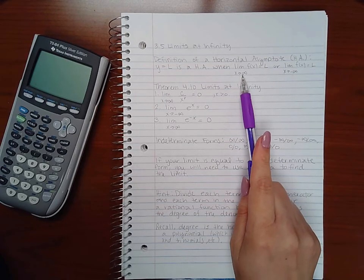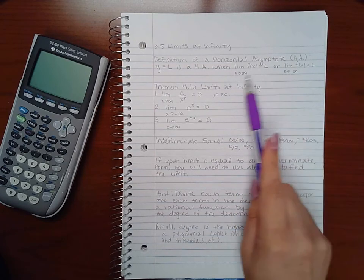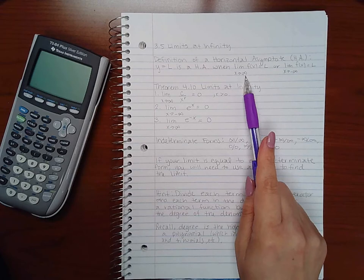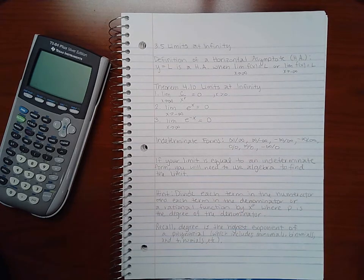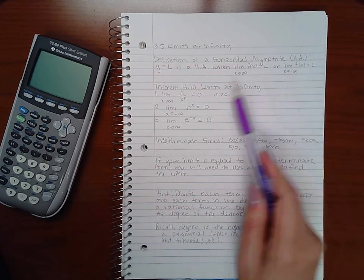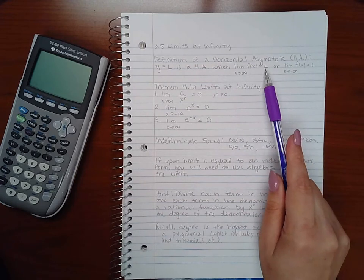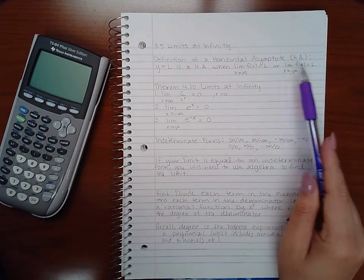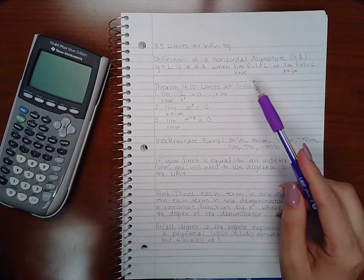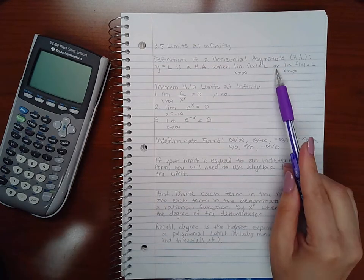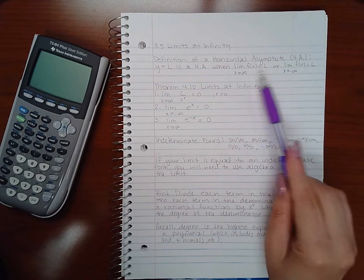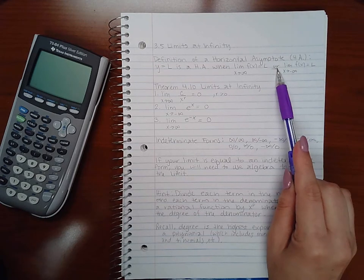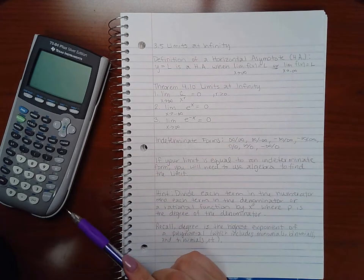It only needs to happen in one direction, either whether it's happening as x approaches positive infinity or it's happening as x approaches negative infinity. If that y value is going towards some real number l, then you have a horizontal asymptote. Sometimes it happens on both ends and sometimes just on one end, which is why the word or is used there instead of the word and.